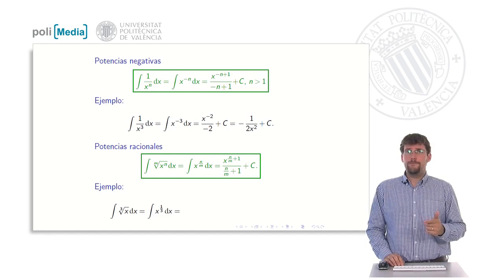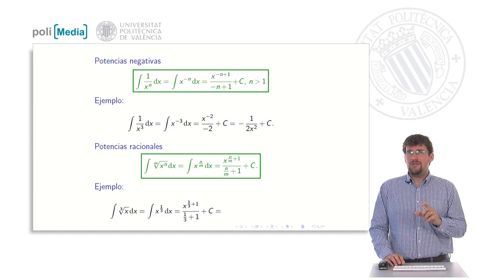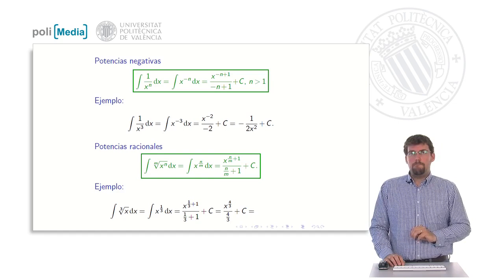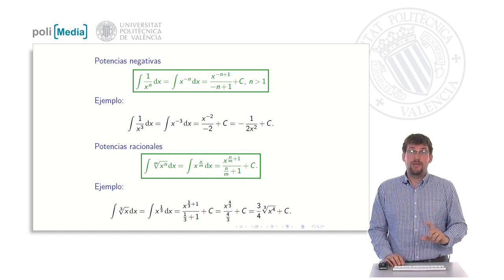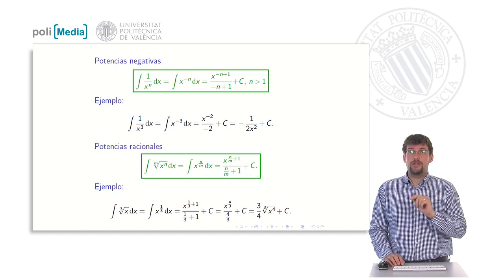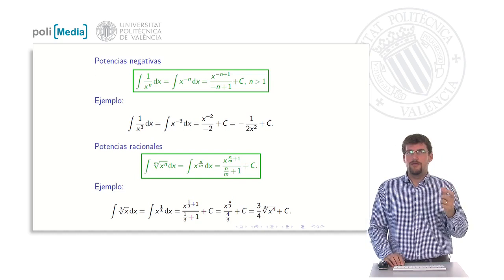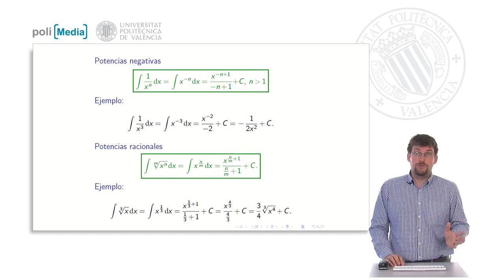An example of a direct application of this rule would be the cube root of x. That would be x power to a third. And we proceed to apply the rule: x raised to a third plus 1 divided by a third plus 1. And now we simplify a little the value of a third plus 1, which as we know are four thirds, both above and below. And now, by sorting out this a little, the four thirds of the denominator become three quarters. And the x raised to four thirds is the cube root of x raised to the fourth. We have changed again the notation from power to radical and from radical to power. And this would be the final result.